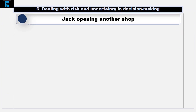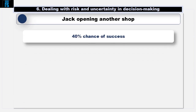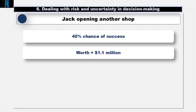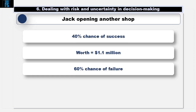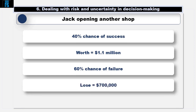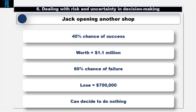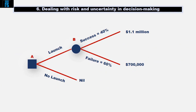Let us consider a simple example. Jack is considering opening another sandwich shop. He thinks from experience there will be a 40% chance that the new shop will succeed, in which case it will be worth $1.1 million. If he launches a new shop but it is ultimately unsuccessful, it will lose him $700,000. He could of course decide to do nothing. Let us assume for these purposes Jack is risk neutral.